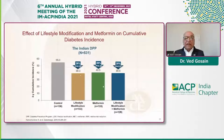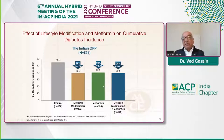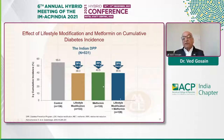In the Indian study, both lifestyle modification and metformin had approximately 26% to 29% reduction. Somewhat surprisingly, there was no additional benefit of adding metformin to the lifestyle modification. So done well, lifestyle modification itself may be sufficient.